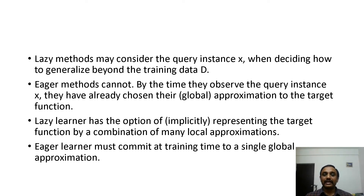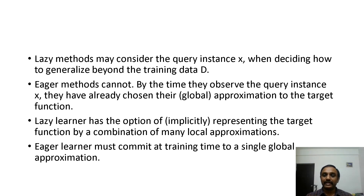Lazy learners have the option of representing the target function as a combination of many local approximations — for example, by considering nearest neighbors, allowing many local approximations to be used. Eager learners, by contrast, must commit at training time to a single global approximation, such as in back propagation where gradient descent leads to a global minimum.